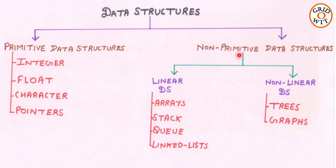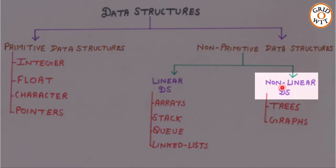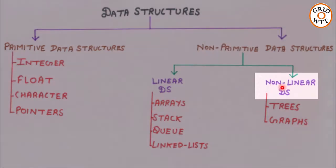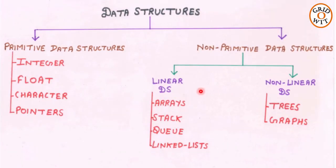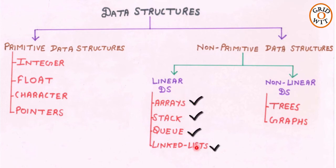Basically, non-primitive data structures can be classified into two subcategories. In linear data structures, elements form a linear sequence. Examples include arrays, stacks, queues, and linked lists.